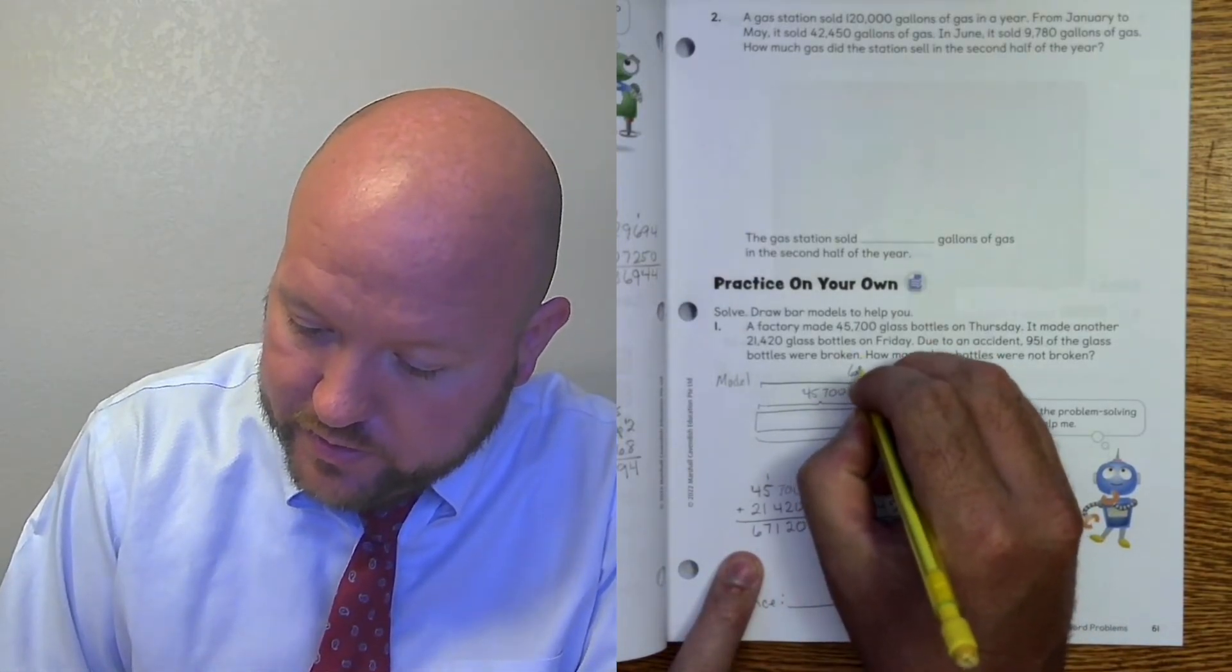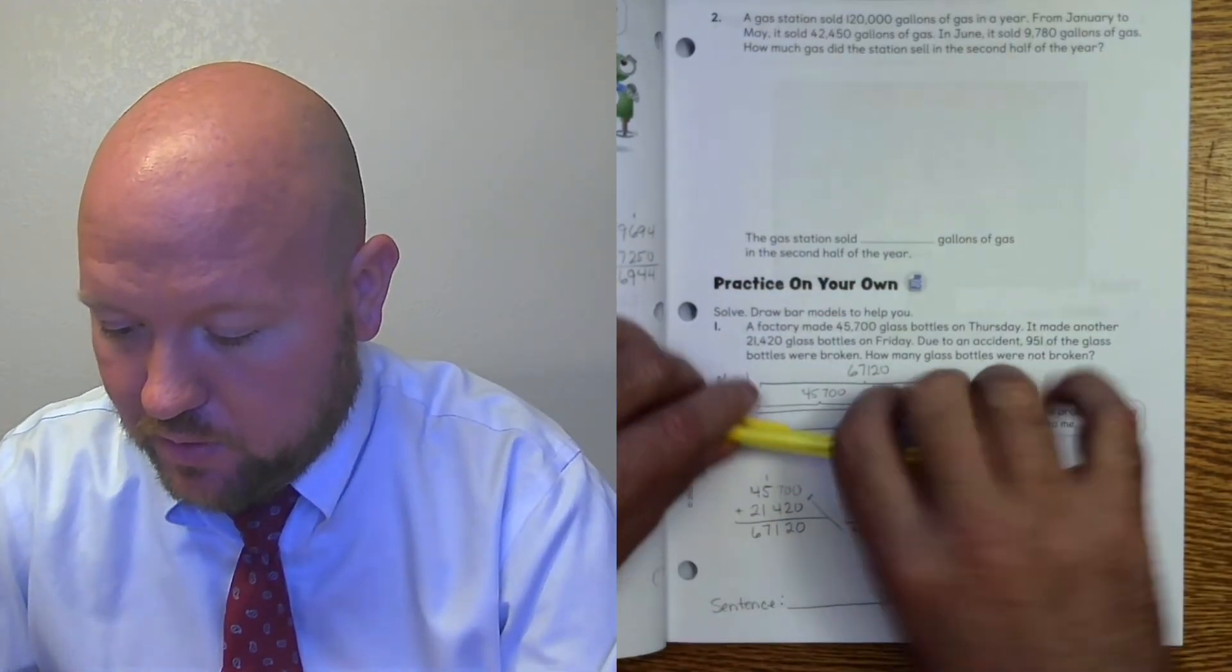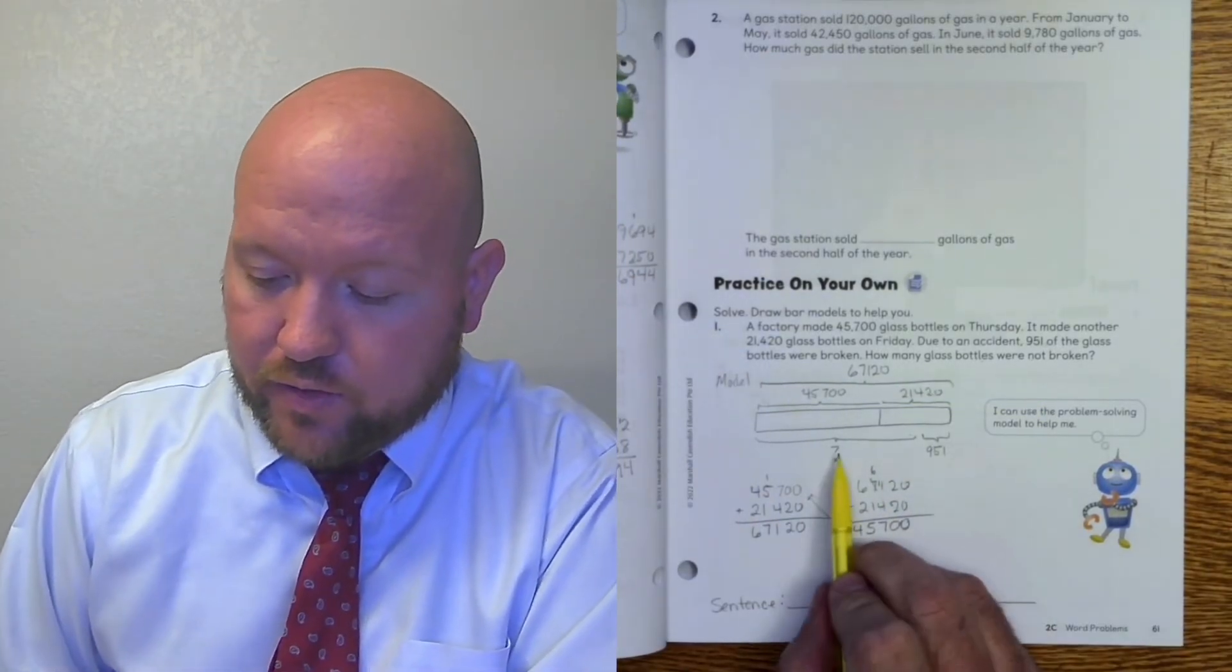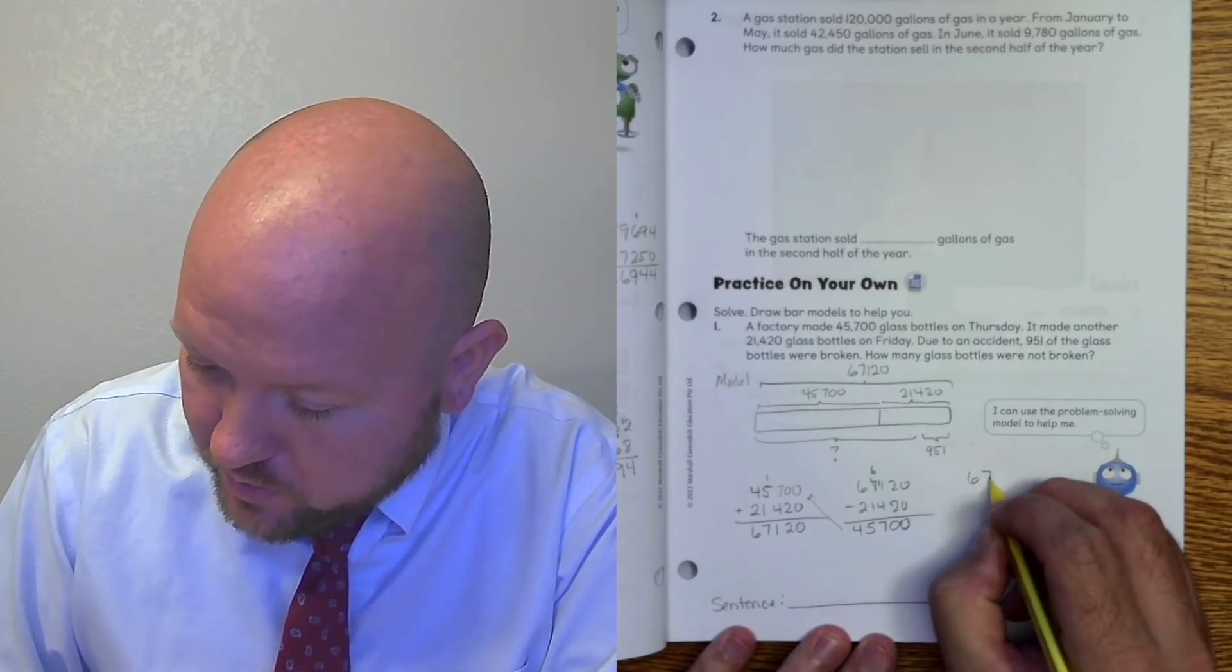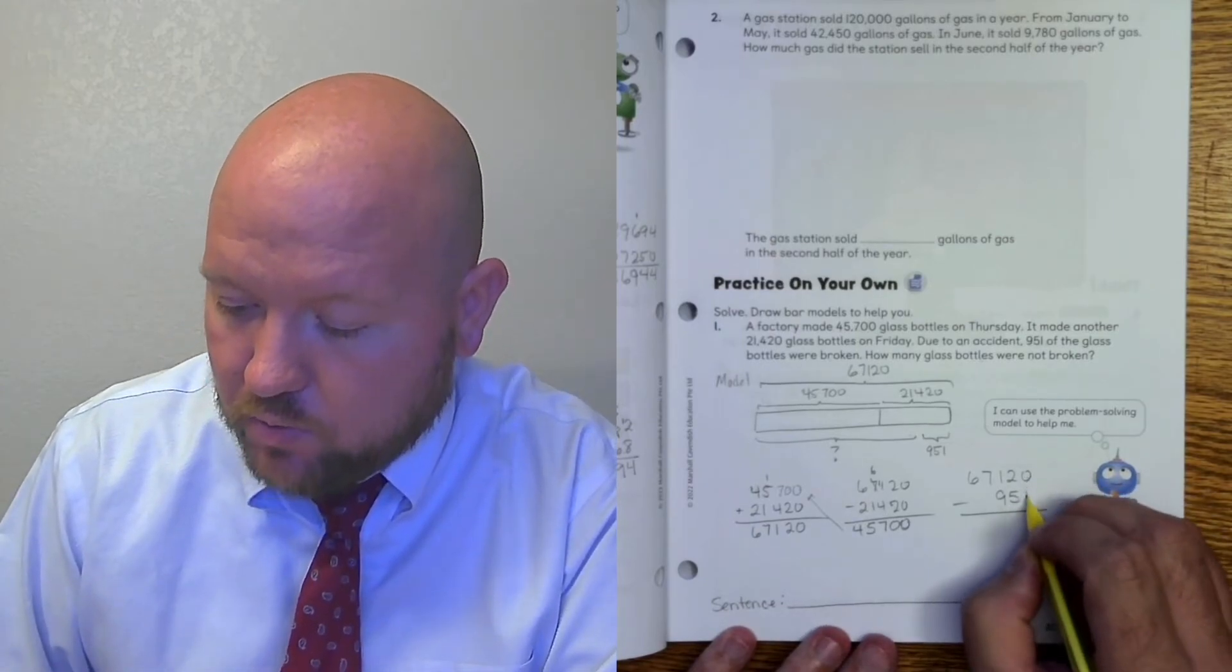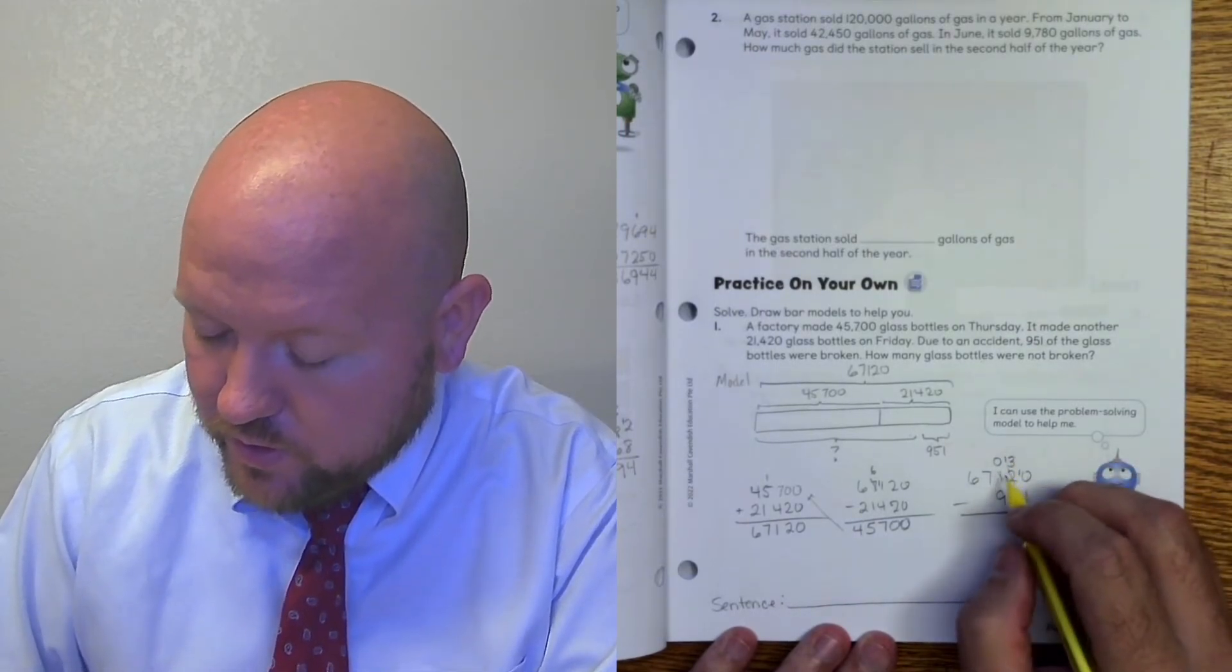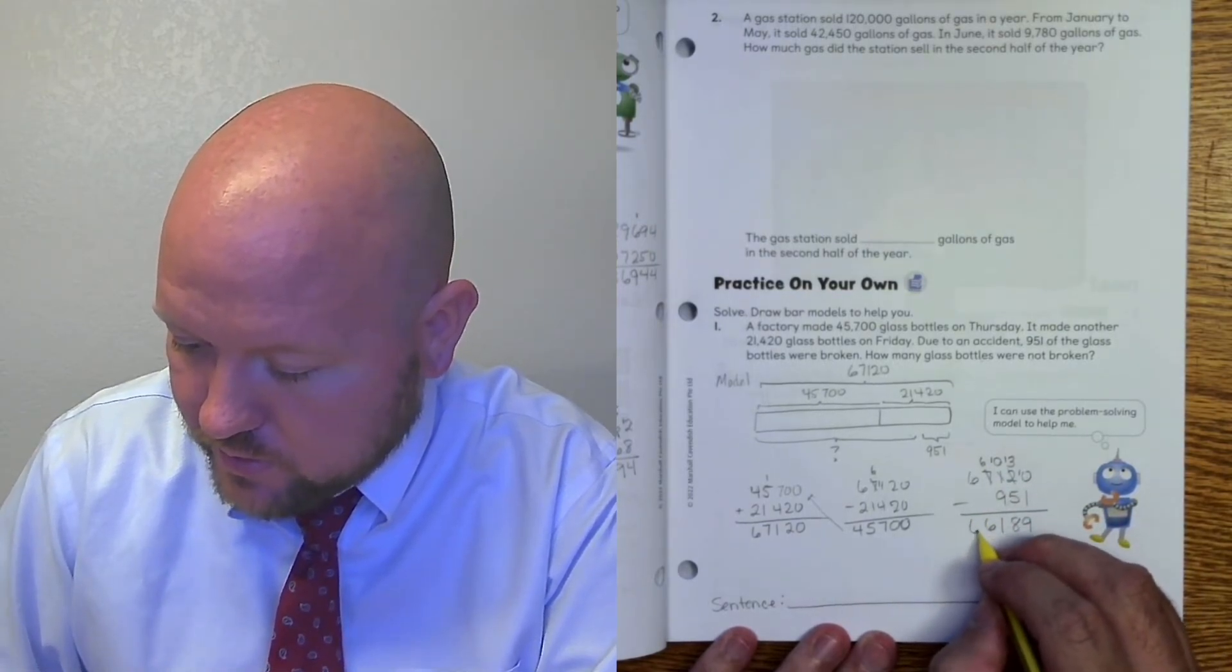So now I know that I have 67,120 bottles in all. Now that I know that, so I can get rid of these numbers in the middle. And now I basically have, in order of that line, I have two parts. I have the part that was broken and the other part, the difference. So how am I going to figure out this? If I know the whole and I know one of the parts, how do I find the missing part? I use subtraction. So now I'm going to do 67,120 minus 951. 0 minus 1. I need to regroup. This becomes a 3. This becomes a 10. 10 minus 1 is 9. 3 minus 5. I need to regroup. This becomes a 0. This becomes a 13. 13 minus 5 is 8. 0 minus 10. I need to regroup. This becomes a 6. This becomes a 10. 10 minus 9 is 1. 6 minus nothing is 6. 6 minus nothing is 6.